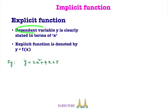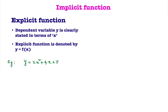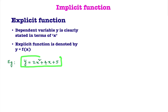Here, dependent variable means: if I take x = 1, based on that only we will get the y value. In this equation, x is the independent variable. y is the dependent variable because y value depends upon x value. So here, in this example, y is clearly stated in terms of x.